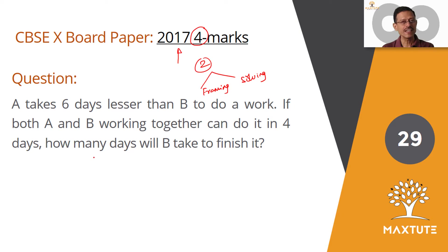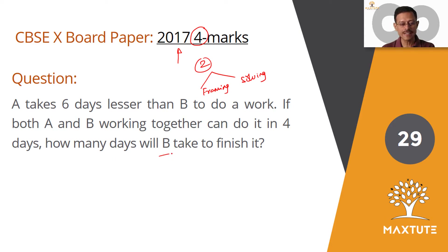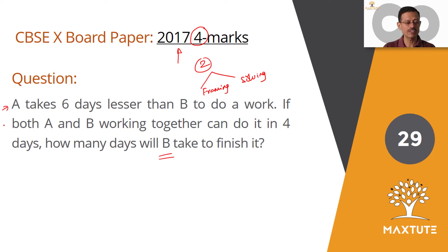Read the question first. A takes six days lesser than B to do a work. If both A and B working together can do it in four days, how many days will B take to finish the task? What we need to find out is how long B is going to take. These two pieces of information have been given to us.